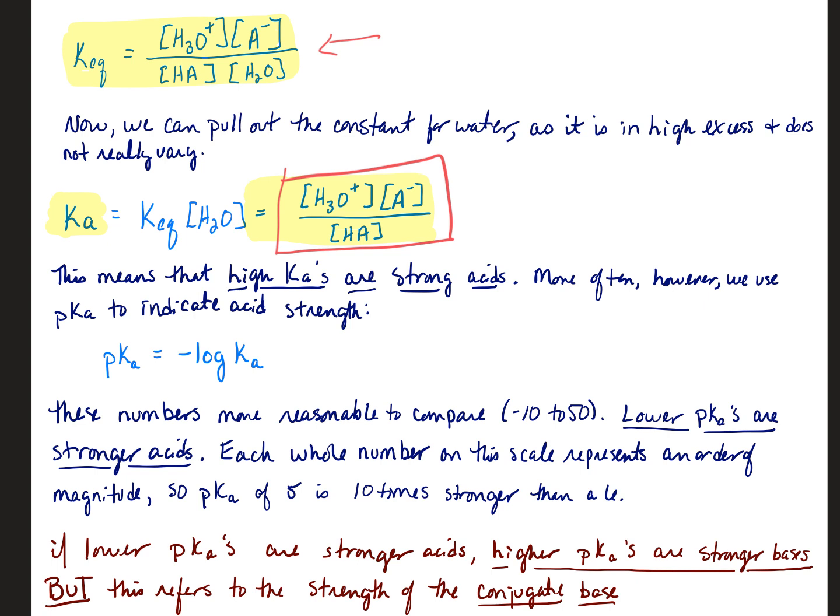That means that high KAs are very strong acids because what that means is that they have been deprotonated. They have reacted nearly fully from the left-hand side of the reaction to the right-hand side. So that would be a very strong acid.